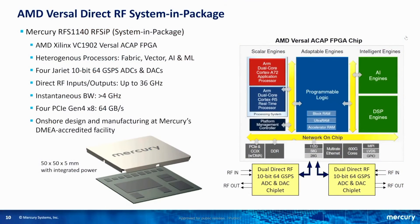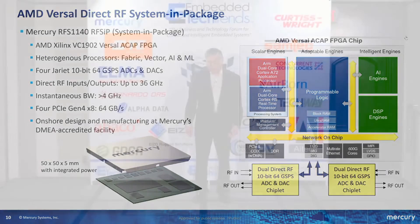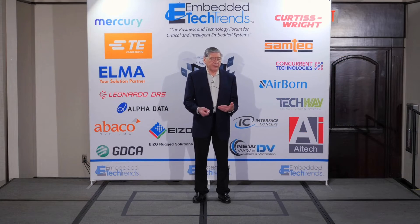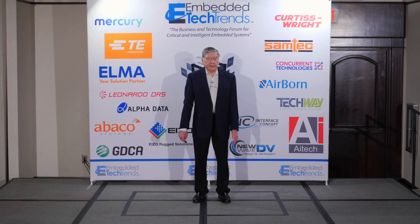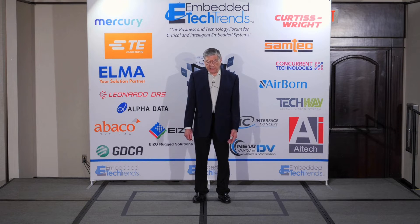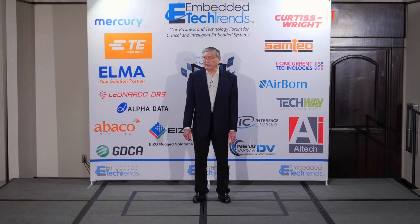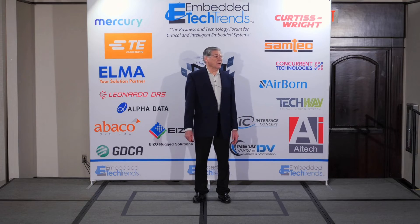Another example is based on the Versal device from Xilinx — now acquired by AMD — in an RF system in package. This is a Mercury system in package where we take the Versal ACAP, the AI-capable artificial intelligence version of Versal, connected to a transmit-receive chiplet family that gives us four channels of analog input and analog output. It's another approach using a different FPGA manufacturer, ready to go on a board or product.